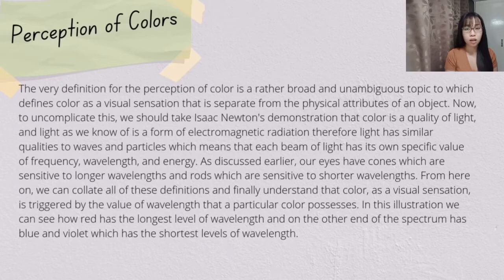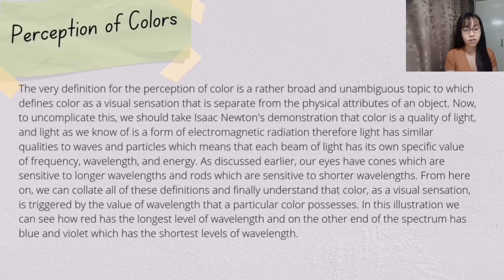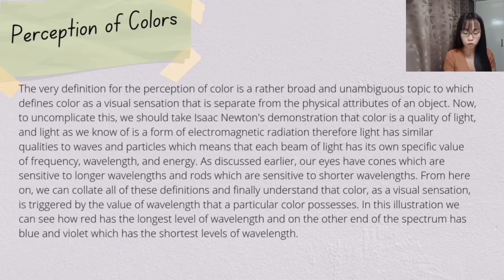As discussed earlier, our eyes have cones, which are sensitive to longer wavelengths, and rods, which are sensitive to shorter wavelengths. From here on, we can collate all of these ideas and definitions together and finally understand that color as a visual sensation is triggered by the value of wavelength that a particular color possesses. In this illustration, we can see how red has the longest level of wavelength, and at the other end of the spectrum are the blues and the violets, which have the shortest level of wavelength.